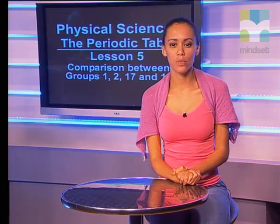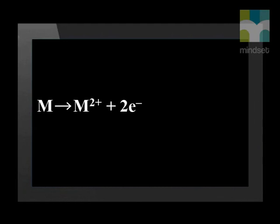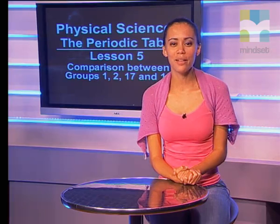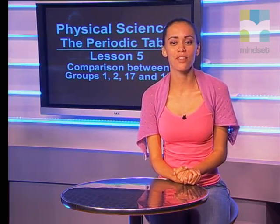Now let us look at group 2, which has two valence electrons in its outer electron shell. An atom in group 2 donates both its valence electrons in order to have a full outer electron shell. When it donates the electrons, it becomes a positive ion. What do you notice if we compare the electronic structure of the positive ion with that of the previous noble gas? We see that the electronic structures are the same. So the elements in group 2 get the previous noble gas structure if they donate their valence electrons, and at the same time they become positive ions.